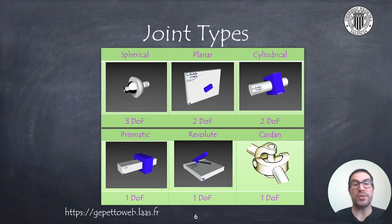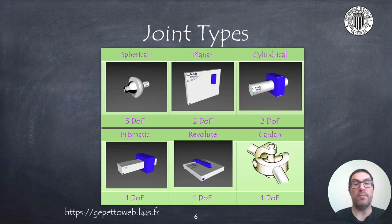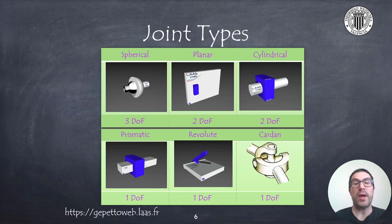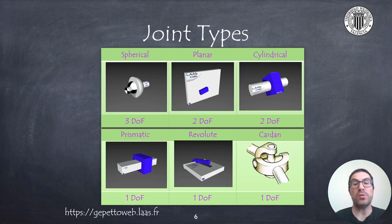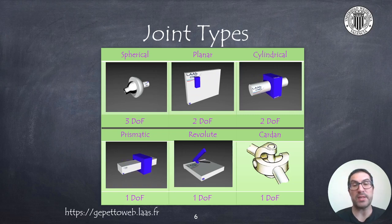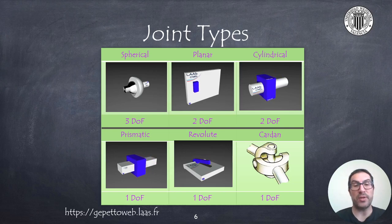Also, we have a planar joint that allows 2 degrees of freedom, both related to the position variables — you can see that it is moving on a plane. Then we have the cylindrical joint, that also has 2 degrees of freedom, but in this case one allows changes in the position along a given axis, and the other one the orientation about that axis.